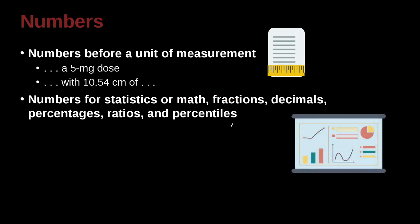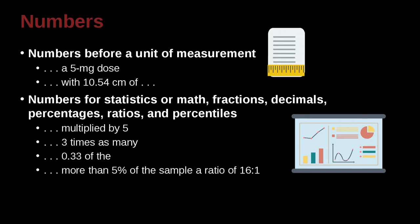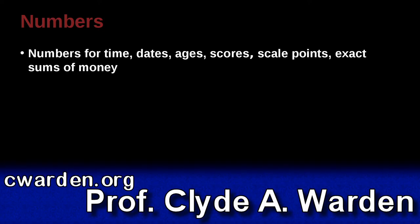Numbers for statistics, for math, for fractions, for decimals, for percentages, for ratios, and for percentiles should all be written by the number like this. Multiplied by 5, 3 times as many, 0.33, more than 5% of the sample, a ratio of 16 to 1, the 5th percentile. So these are percentile groups, that is groupings. You should always use the number like that.